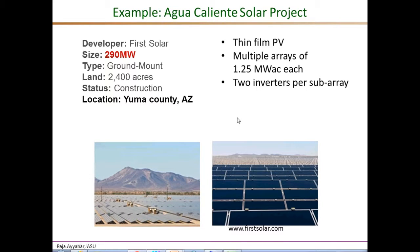This is an example of a large utility scale PV power plant in Yuma County, Arizona, not too far from ASU. This is the Agua Caliente solar project, spread over 2,400 acres. When completed, it will generate a peak power of 290 megawatts. The panels are arranged in multiple sub-arrays of 1.25 megawatts AC each, and each sub-array is supported by two central inverters, which you can clearly see in the image.